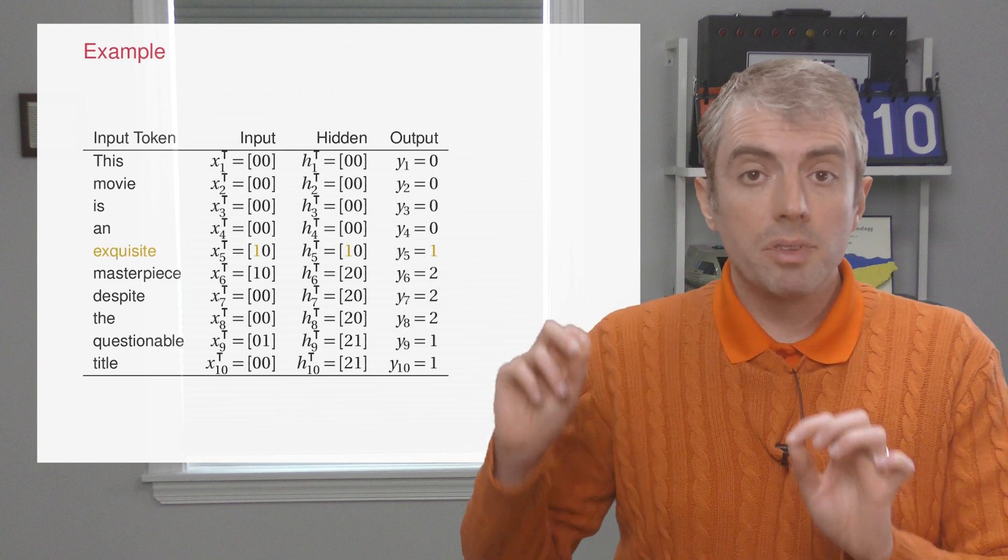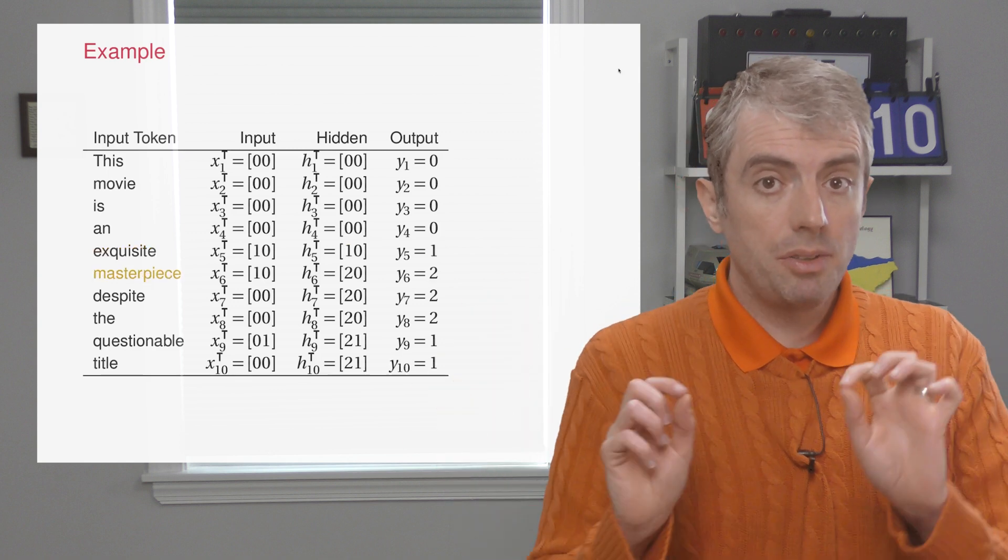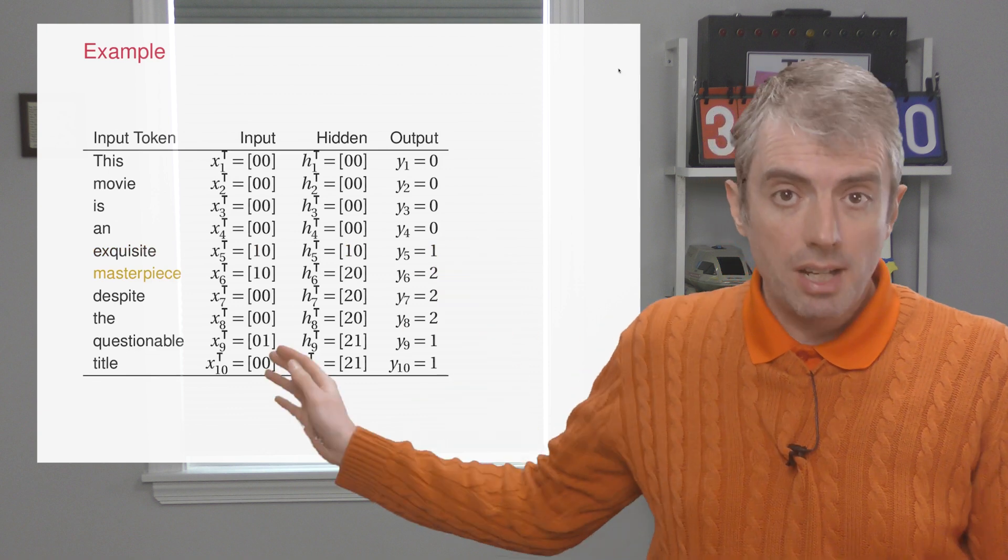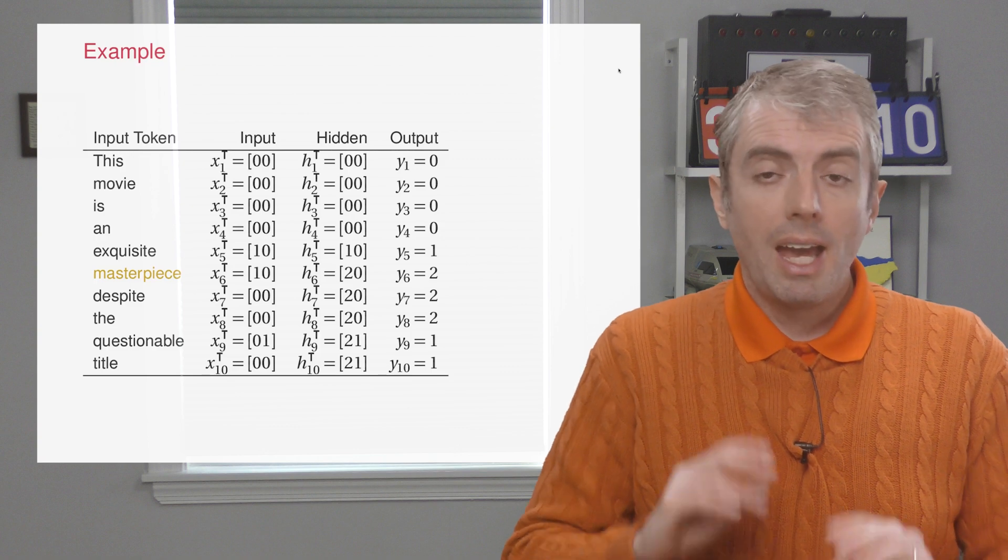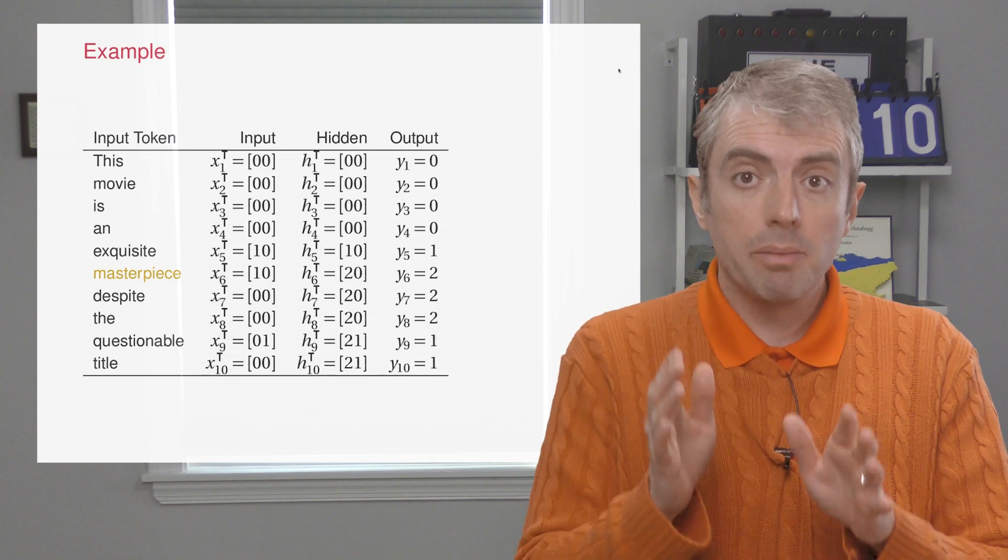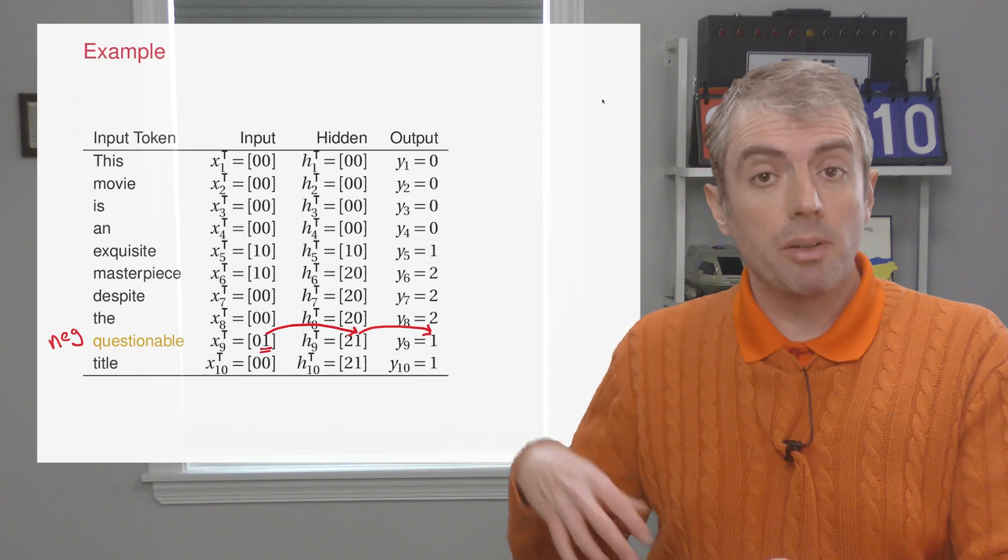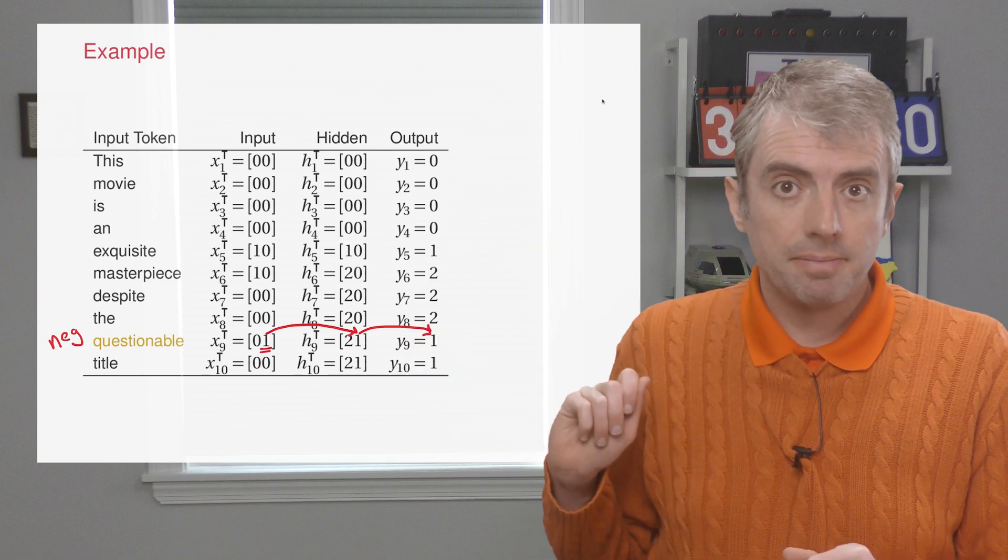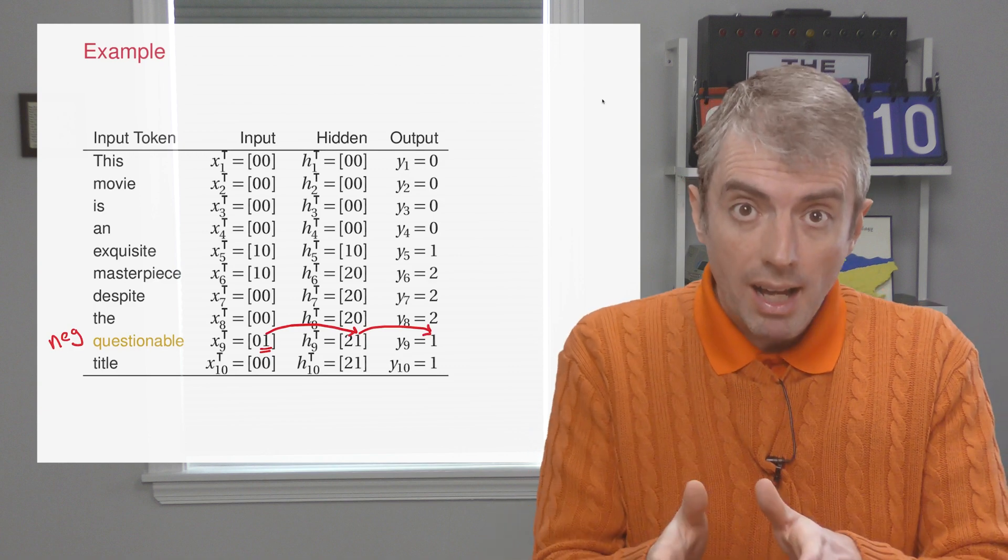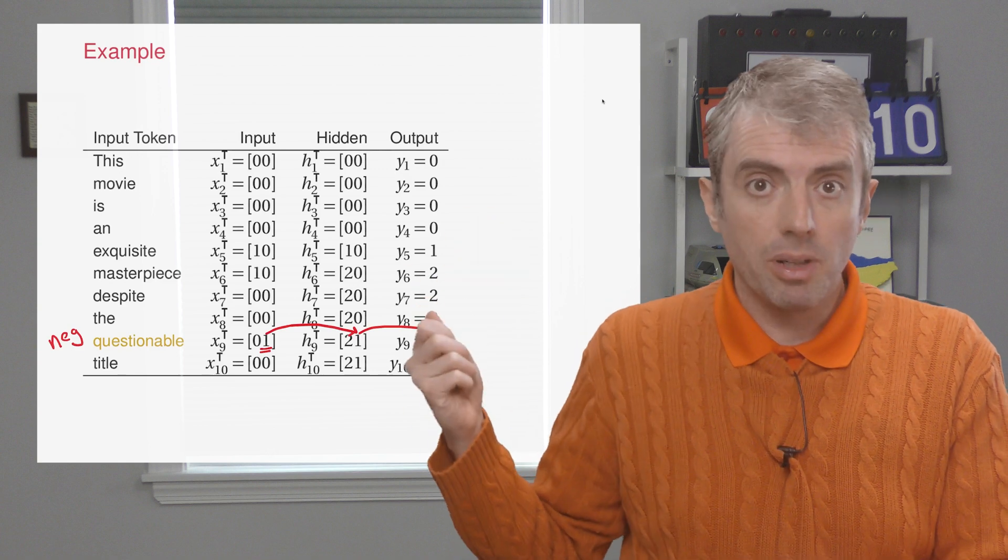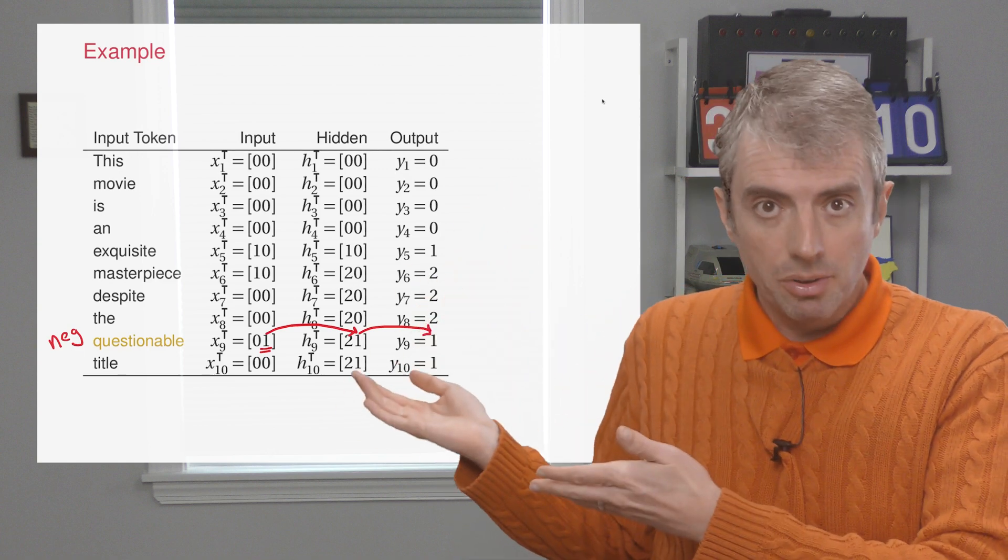and everything else is a zero vector. So then you go left to right, and you compute the hidden vector. It stays zero zero until you get to exquisite, and then it becomes one zero. With masterpiece it becomes two zero, and then it doesn't change until you get to questionable at the end. At which point the hidden vector becomes two one. Because questionable was a negative sentiment word, so it populates that second dimension. Then to get the final output prediction, Y, you take the total positive words and subtract the negative words to get the final score of one.